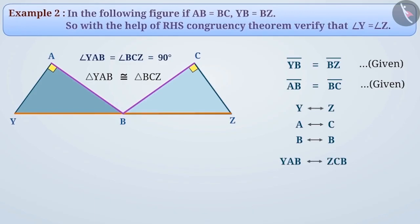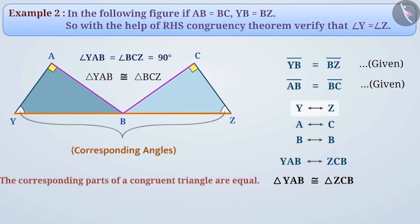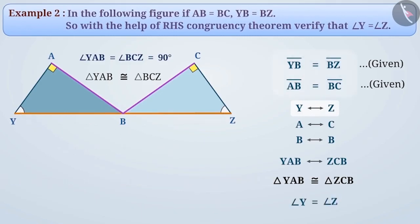So, we can say that triangle YAB is congruent to triangle ZCB. Note that triangle ZCB and triangle BCZ are the same triangle. You will remember that we can write the names of any polygon in different ways. Because vertex Y is corresponding to vertex Z, we can say that angle Y and angle Z are corresponding angles. Since the corresponding parts of a congruent triangle are equal, therefore, we can say that angle Y is equal to angle Z.